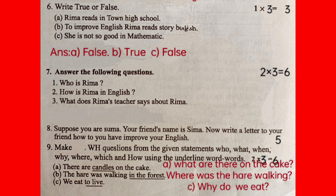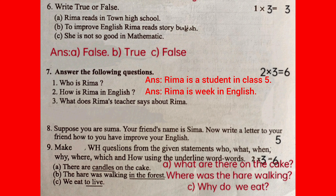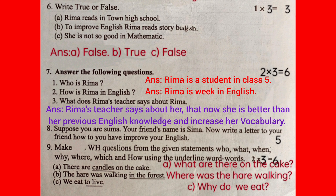Number 7 — answer the following questions, 3 questions. Who is Rima? Rima is a student in class 5. How is Rima in English? Rima is weak in English. What does Rima's teacher say about Rima? Rima's teacher says that now she is better than her previous English knowledge and has increased her vocabulary.